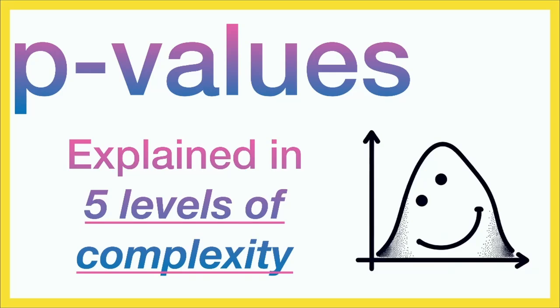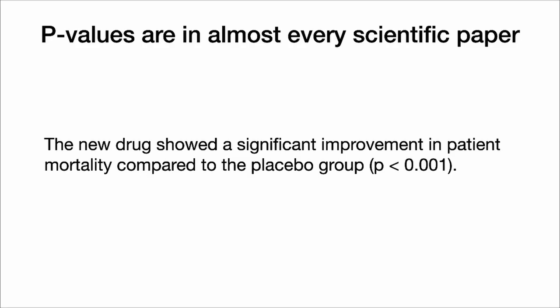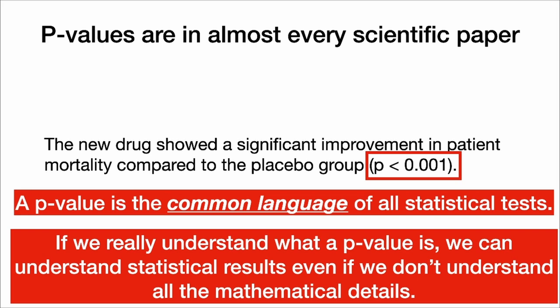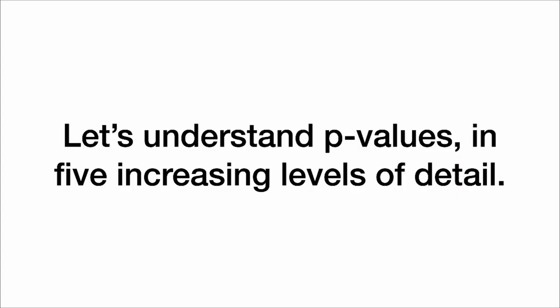Let's learn about p-values in five levels of complexity. P-values are used in almost every scientific paper. We might see a paper say, 'the new drug showed a significant improvement in patient mortality compared to the placebo group, with a p-value of less than .001.' A p-value is the common language of all statistical tests. If we really understand what a p-value is, we can understand statistical results even without knowing all the mathematical details. When we're done with this video, we'll understand why a very small p-value tells us that this drug works.